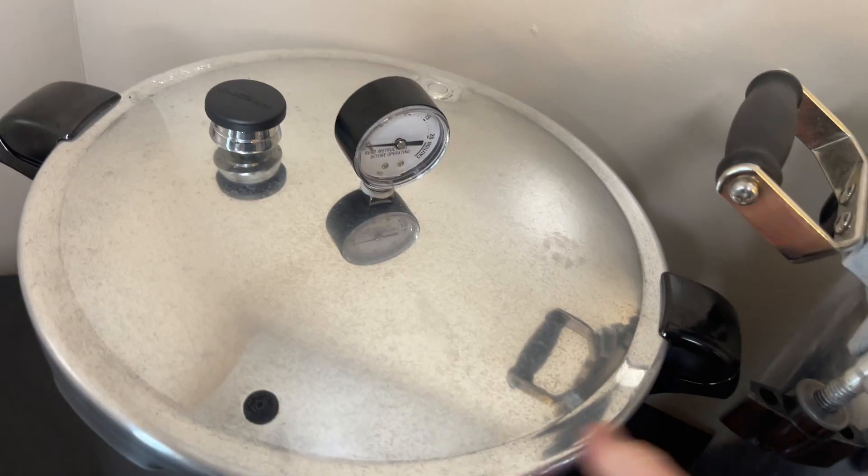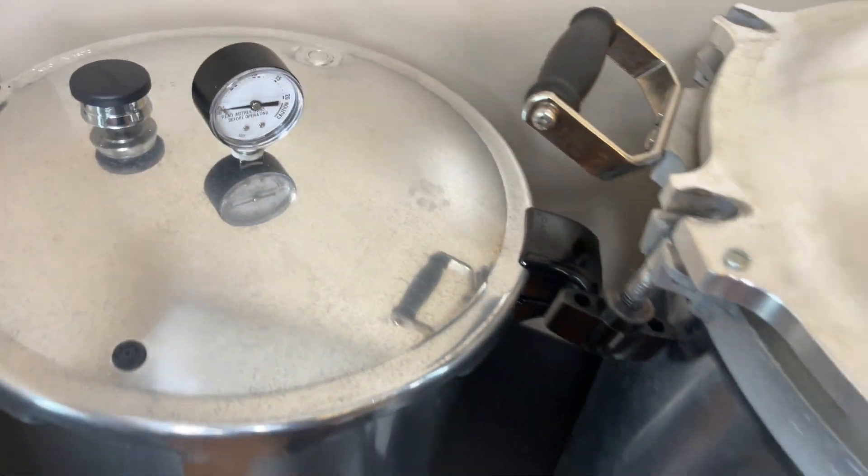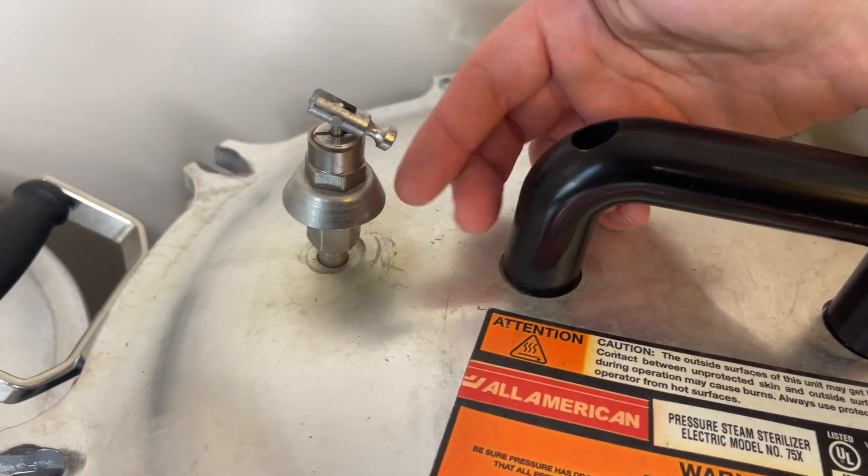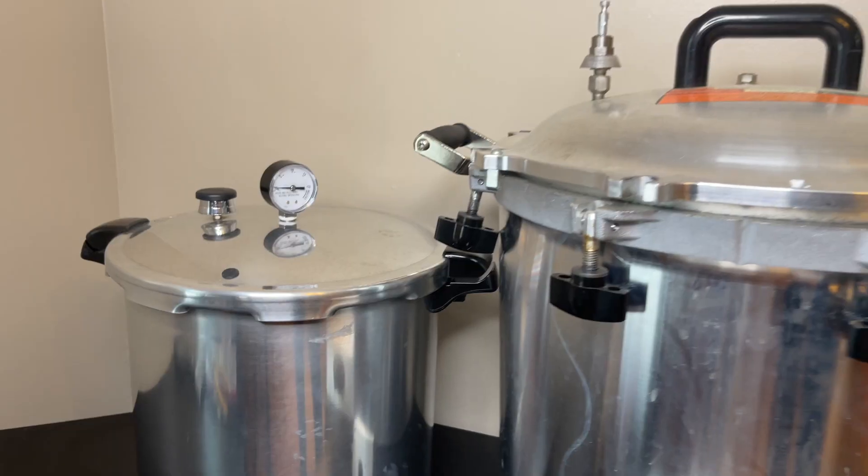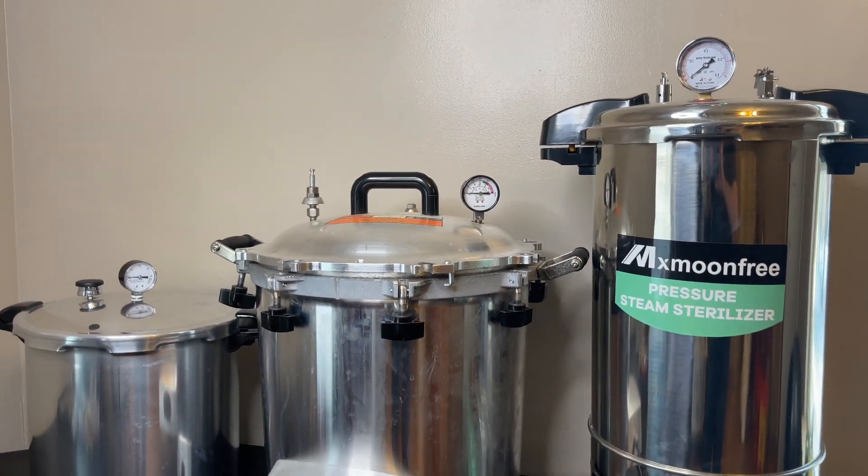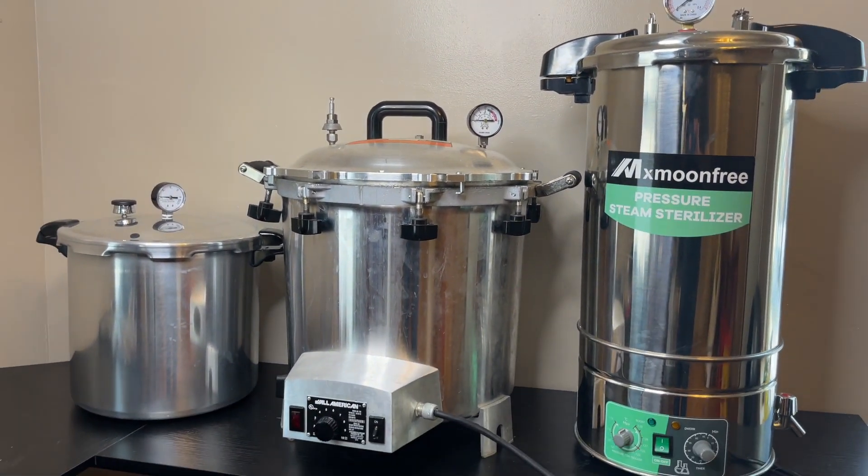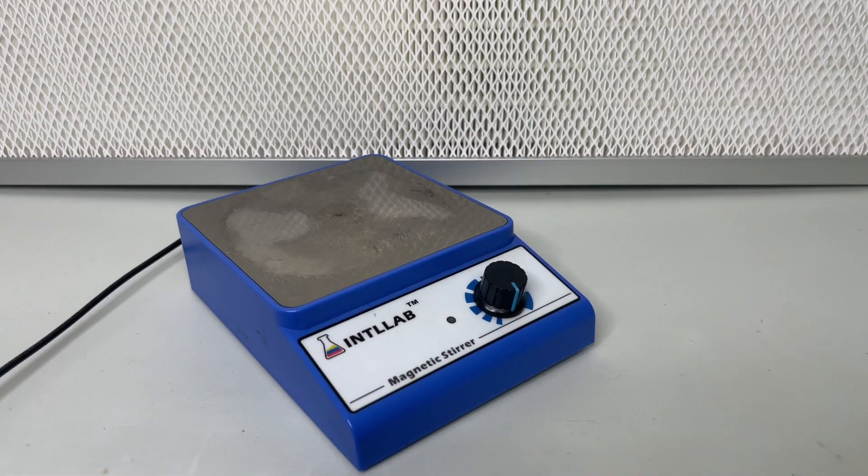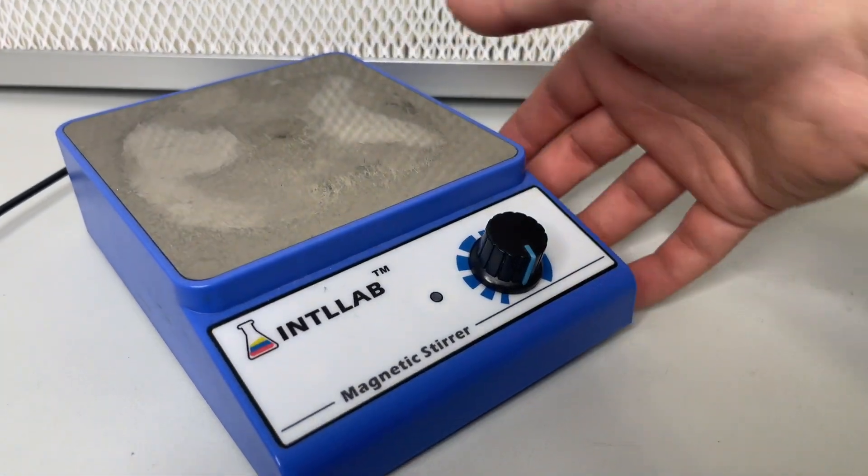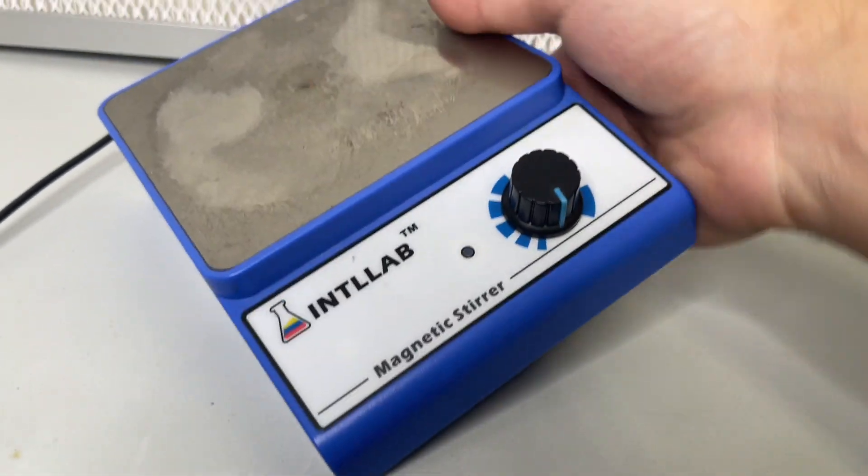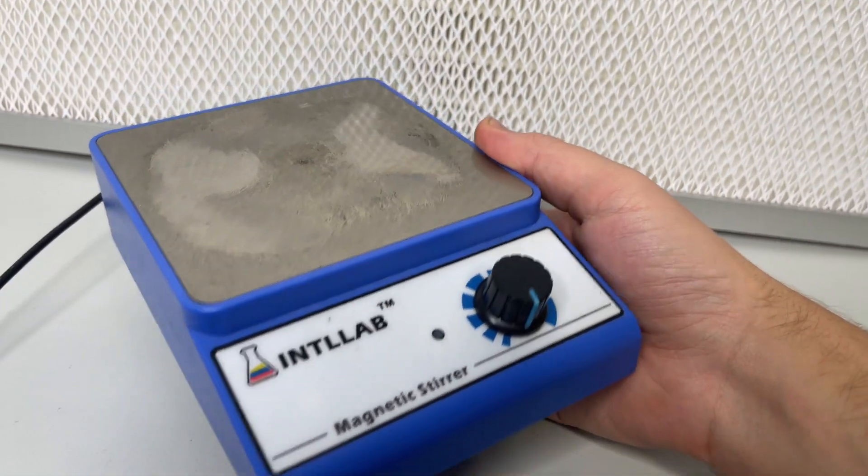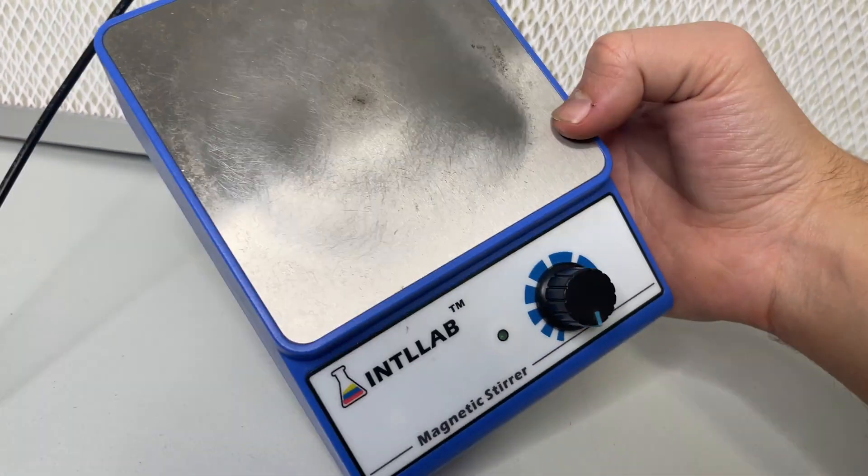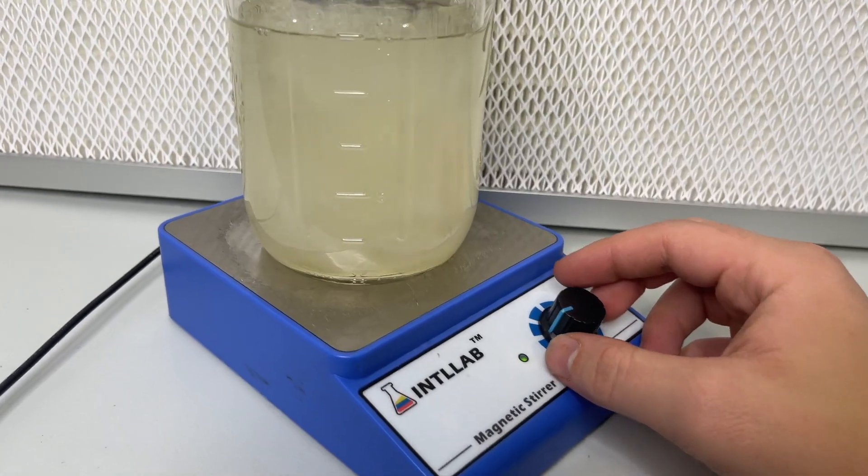I'd say the most reliable and best sterilizer in my possession is the Presto 23 quart on the left. If you have been following my channel closely, you'll remember that I had problems with a mysterious cloudy sediment happening in my liquid culture, and that was actually the All-American sterilizer in the middle that was causing that. I've had this one for like five or six years and it's still going strong.